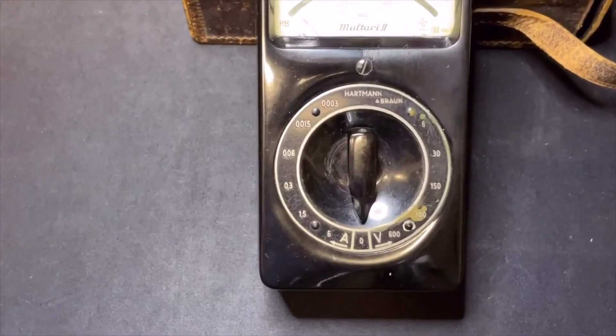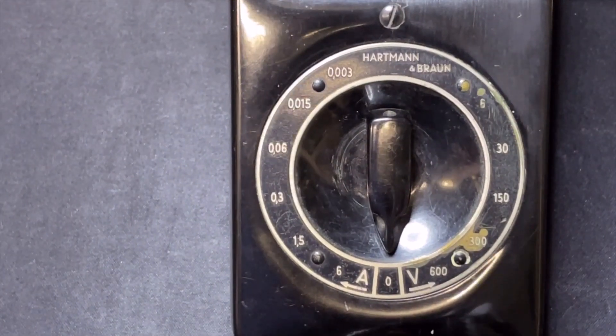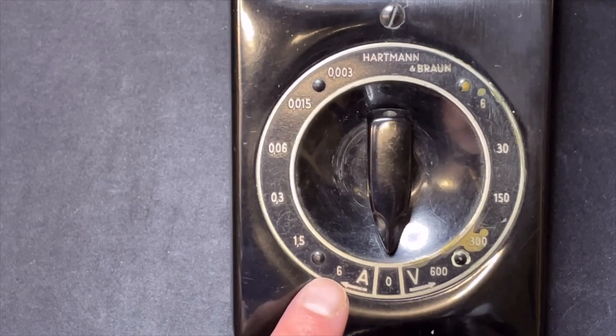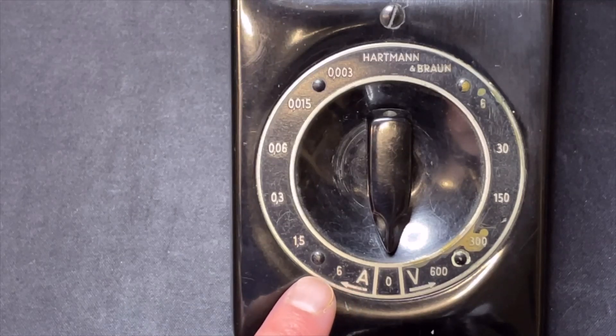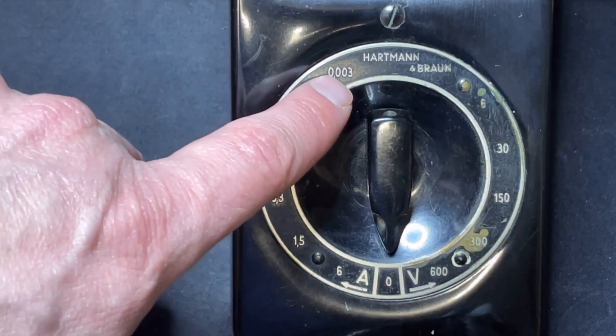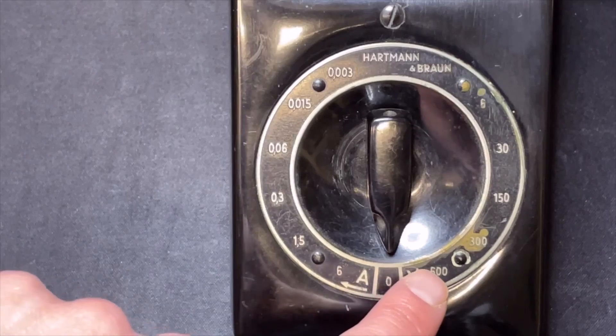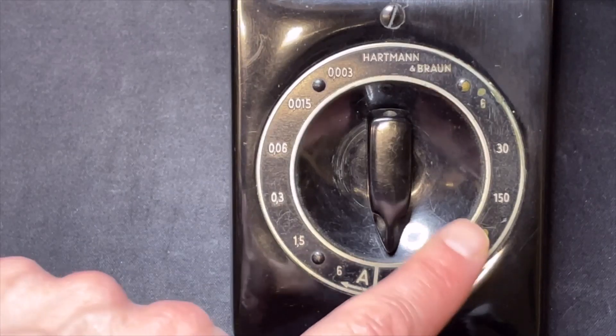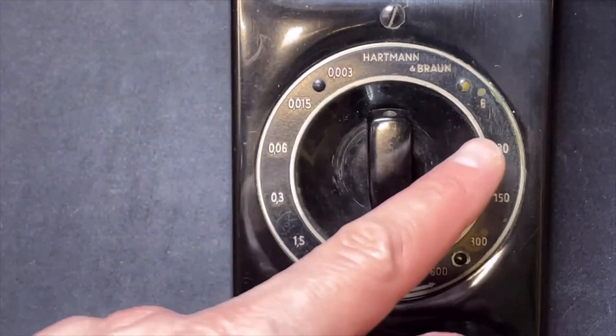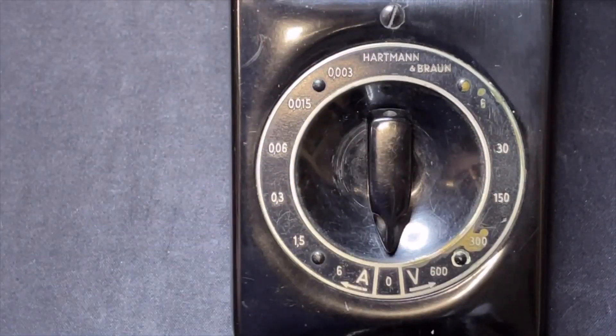Let's have a look at the ranges. As you can see, it can go quite high. This one goes up to six amps, one and a half, three, look at this, all the way to three milliamps. And the voltage is 600, 300, 150, 3, and six. So they are playing a bit with the double and the single numbers.